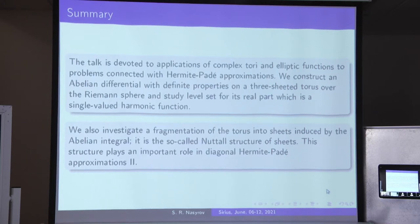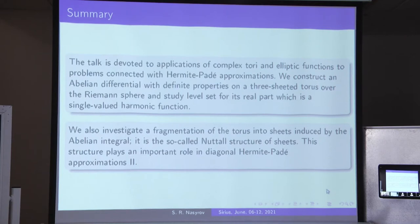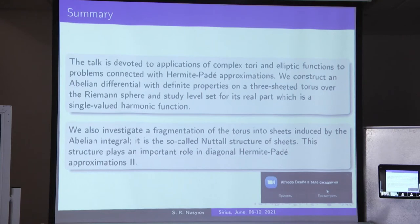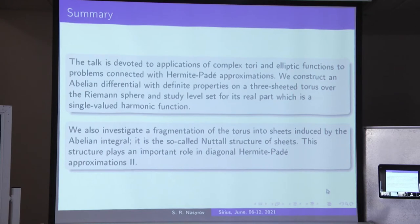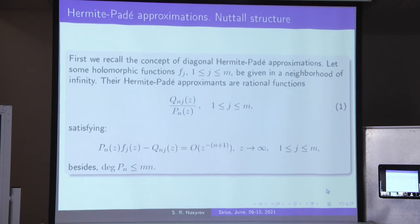Because if we have a Riemann surface over the Riemann sphere, what is a sheet of the Riemann surface? It is not uniquely determined. We must cut along some curves and then obtain sheets of the complex plane and glue them along these slits. This fragmentation is the so-called Nuttall structure, and this structure plays an important role in Hermite-Padé approximation.